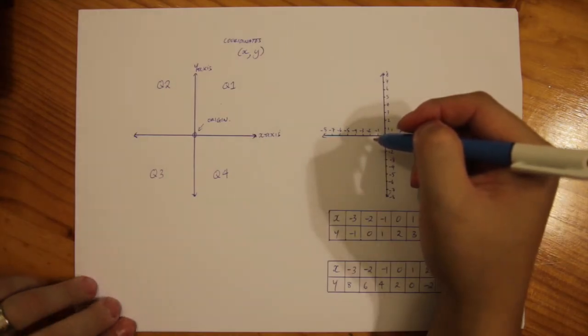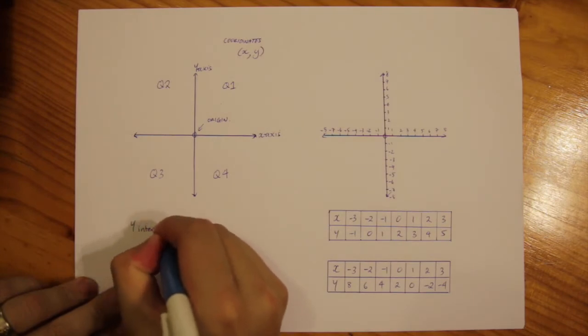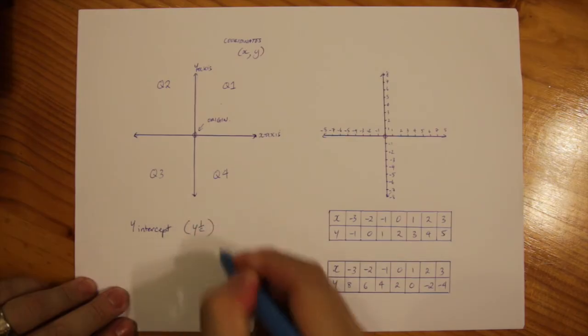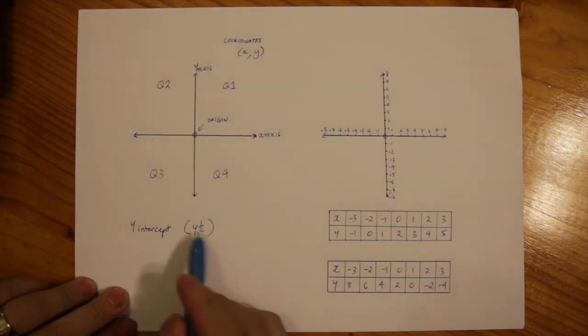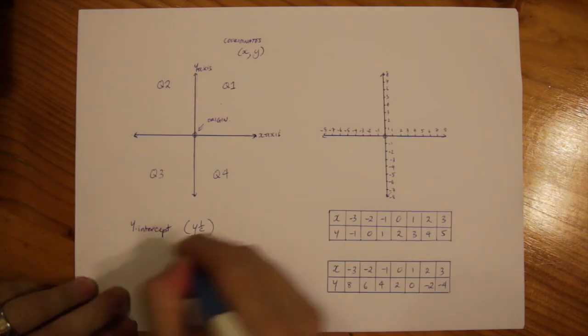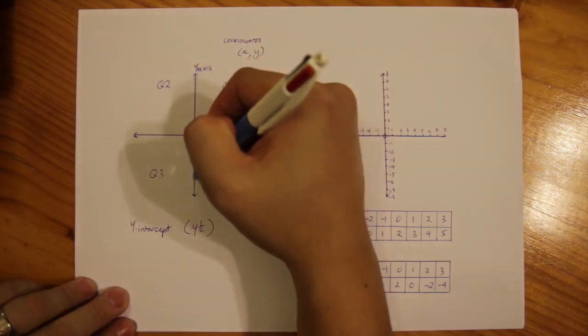So a y-intercept. Now I'm going to have my shorthand. This is my shorthand symbol. That is any point that cuts across the y-axis.